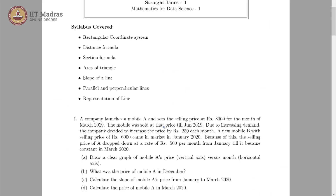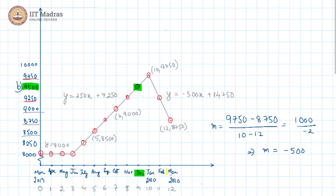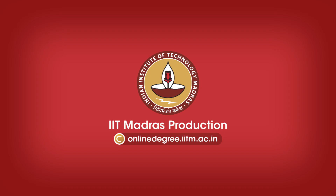Lastly, we are asked: what is the price of Mobile A in March 2020? This is March 2020 on our graph, and we have already found the price — it is 8750. That is our answer for part d. So 8750 is the price of Mobile A in March 2020.